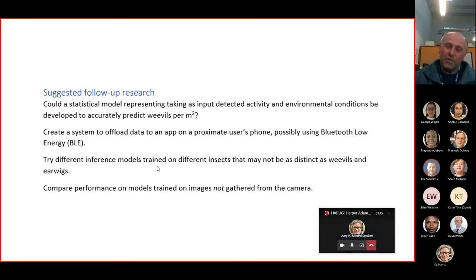Things that would be interesting to do is try different insects. It was pretty easy task, you know, going against weevils and earwigs. And try training it on images that weren't gathered from the camera. I think generally speaking, it seems to me obvious that if you're wanting to classify something that's caught by the camera, then train it on images that were originated from the camera, but who knows, you know, it's certainly worth investigating. So at that, I finished my thing and throw it open for discussion.